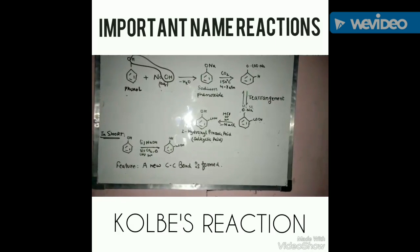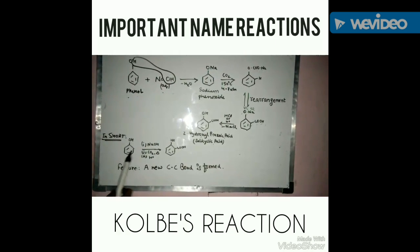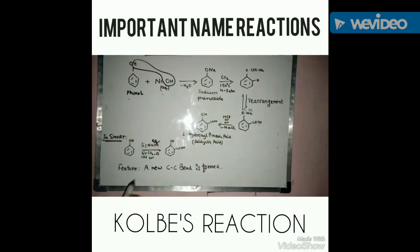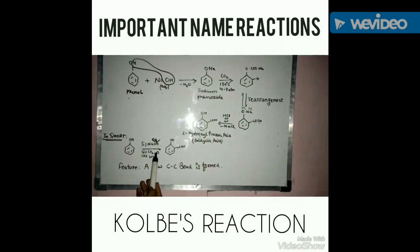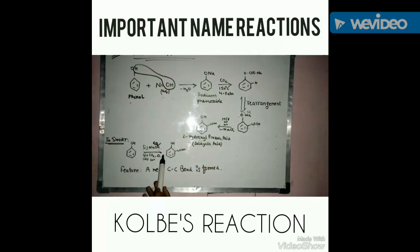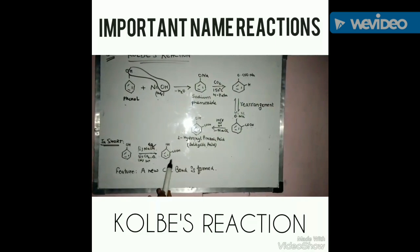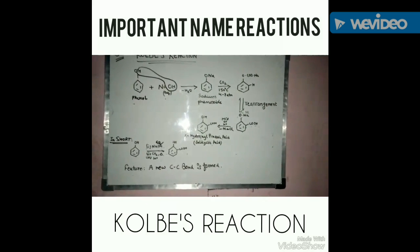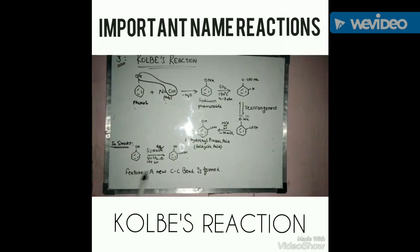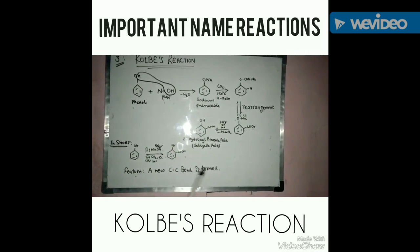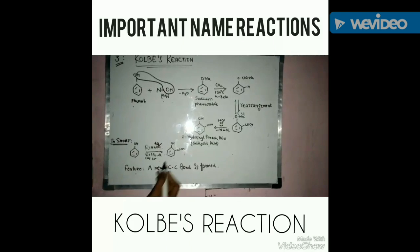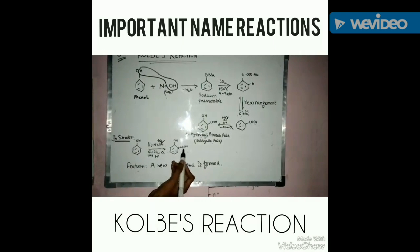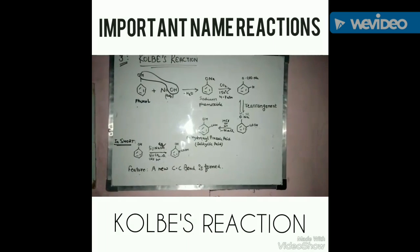In short, this reaction can be written as: phenol, first treated with aqueous NaOH, second with CO₂ upon heating, and third acidification, gives the end product salicylic acid. The main feature of Kolbe's reaction is that a new carbon-carbon bond is formed, where the carbon from CO₂ bonds to the benzene ring carbon.